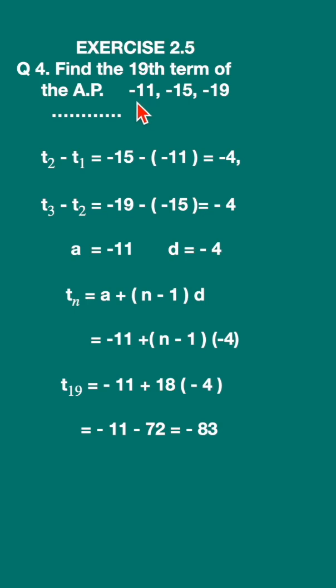We know the first term a is minus 11. Let us find the common difference, t2 minus t1, second term minus first term.